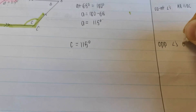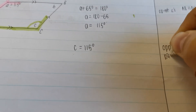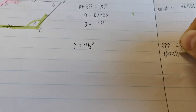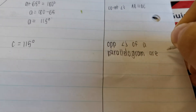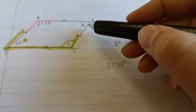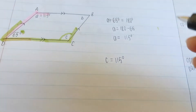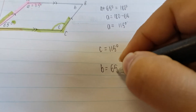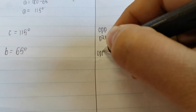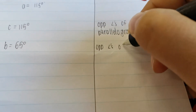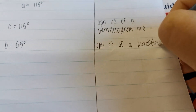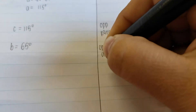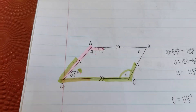This angle is opposite that one, so B is also determined. We are done with this question — we figured out A, we figured out B, we figured out C. If you didn't see that opposite angles are equal, you could have used co-interior angles: 65 plus C equals 180, so 180 minus 65 gives 115.